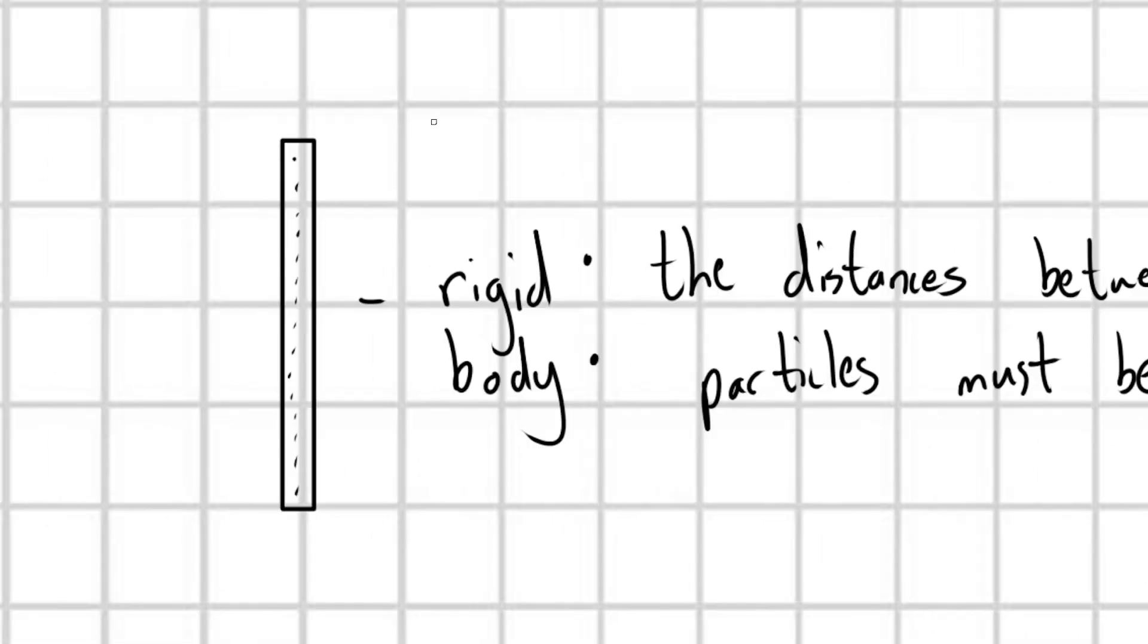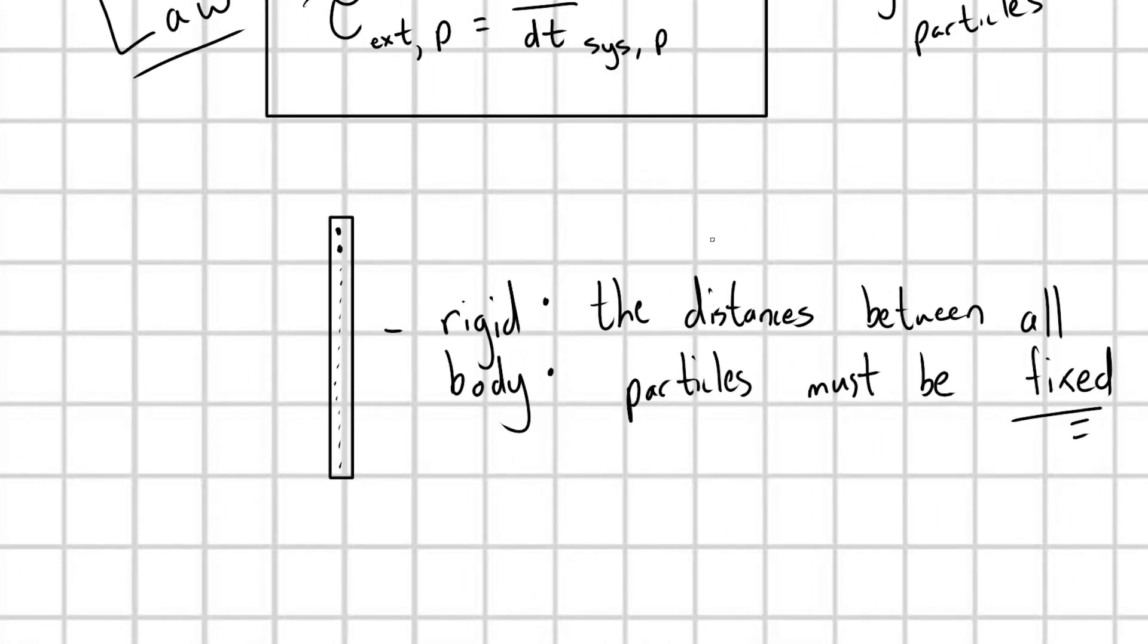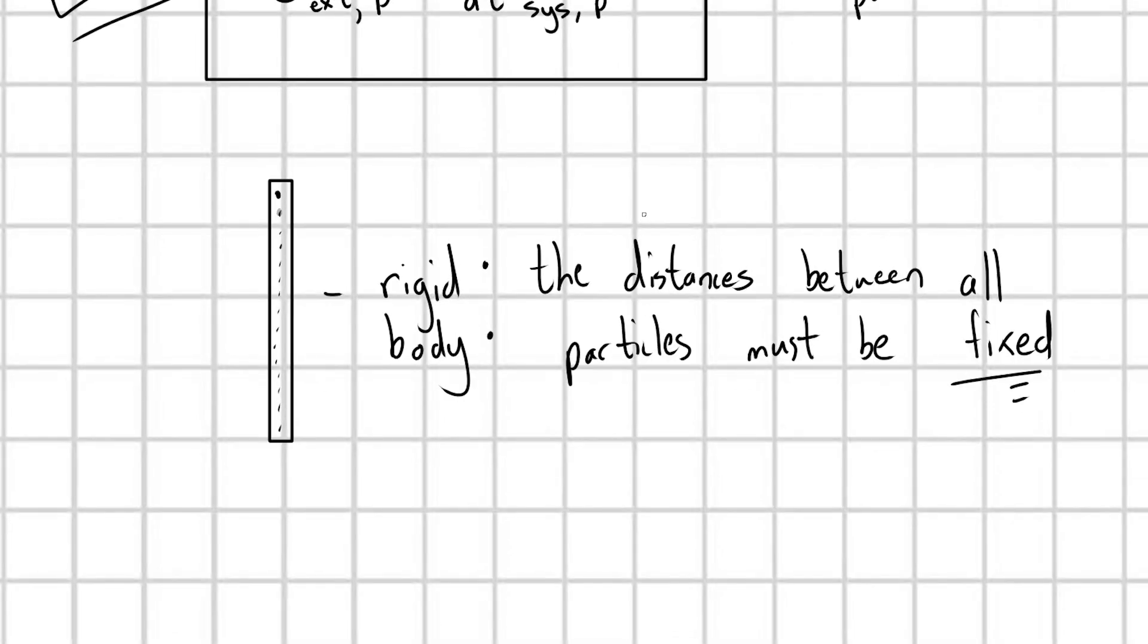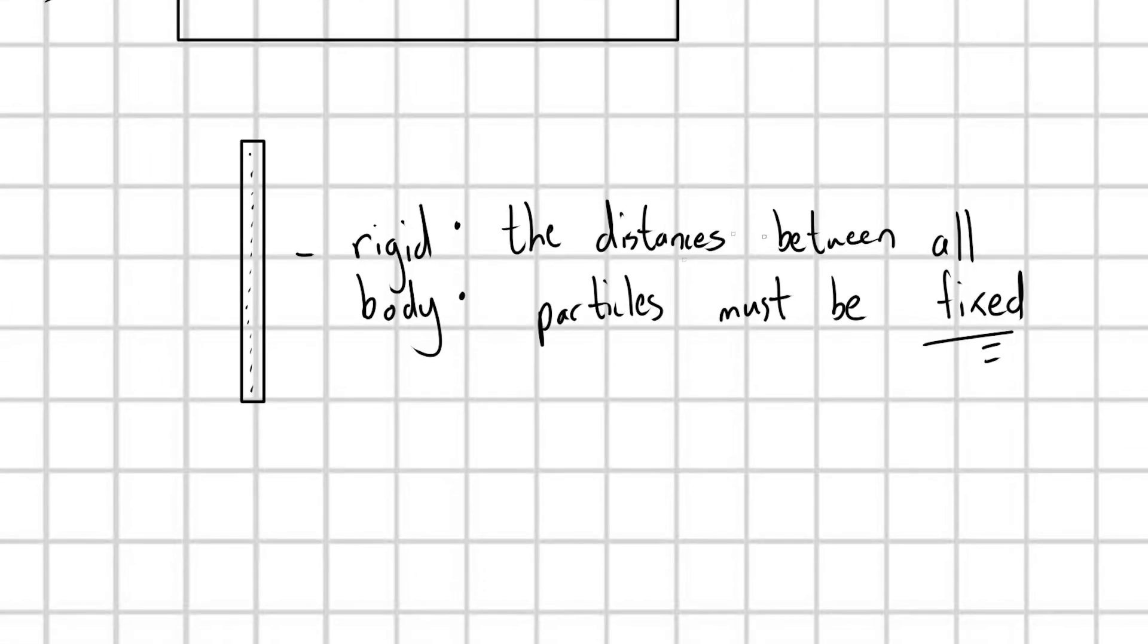As a reminder, a rigid body requires that the distances between all particles must be fixed. For example, if I'm looking at these two particles, no matter what motion the stick undergoes, these particles must always have the same distance d between them. They're locked in place, solid relative to each other. This is somewhat of an approximation because in solids we know that molecules vibrate, so their distances aren't actually fixed. But this is the key assumption of what a rigid body is. The distances between each and every particle must remain fixed relative to each other.